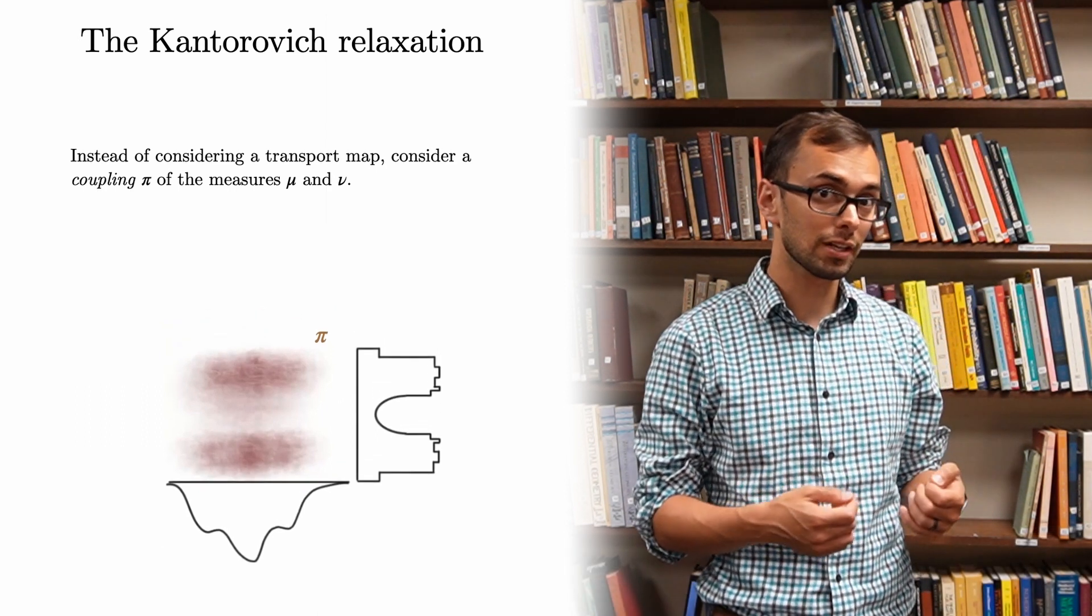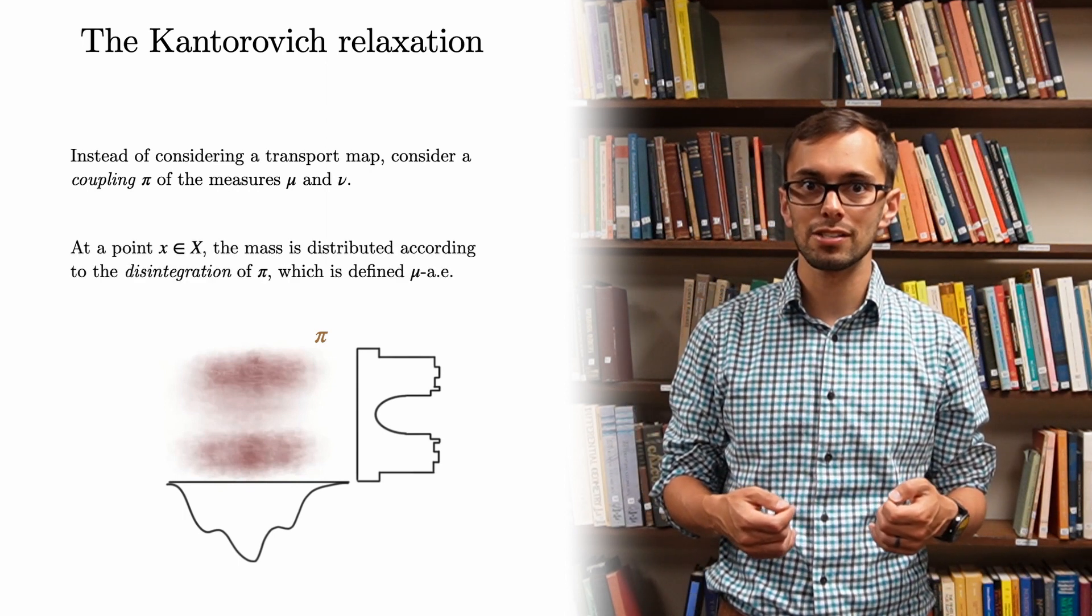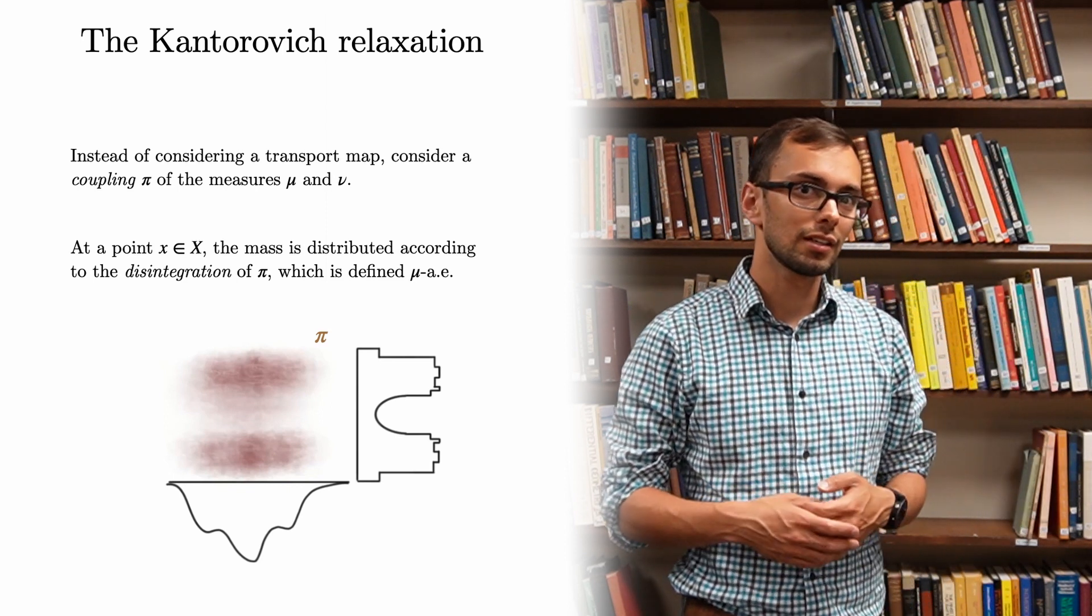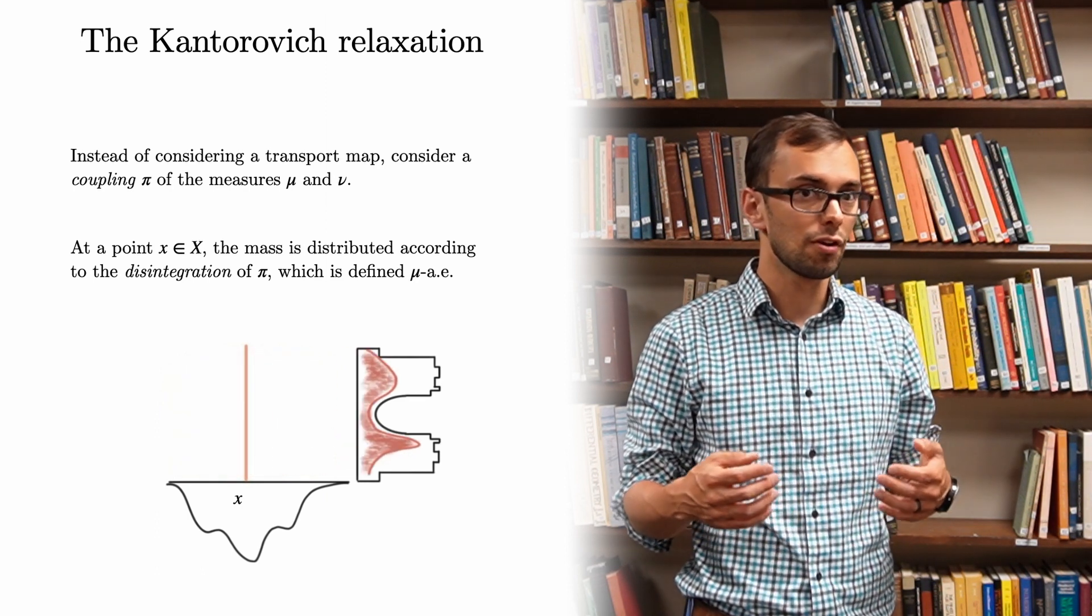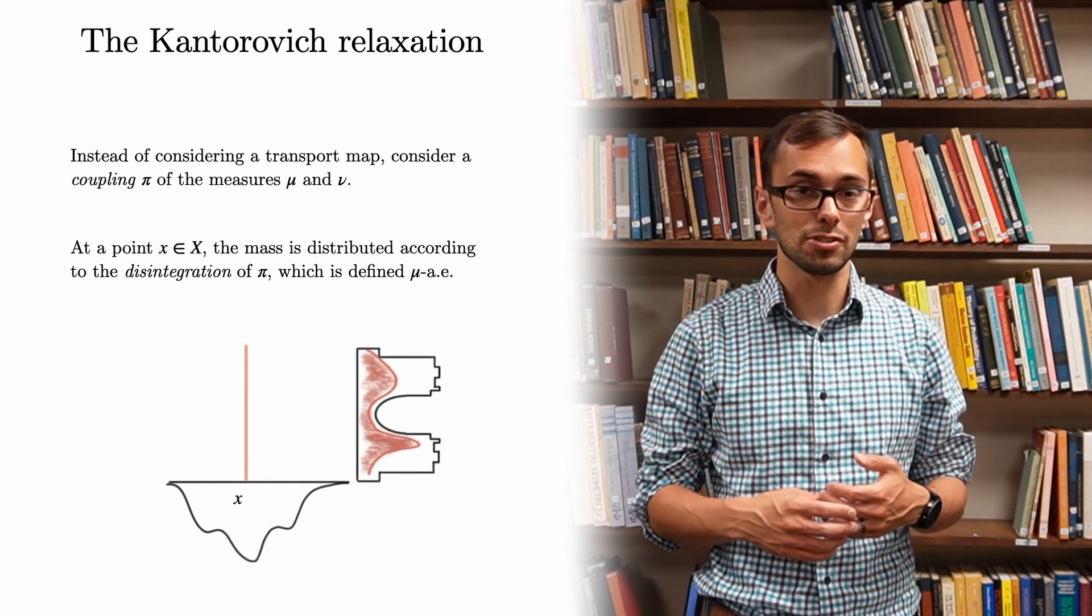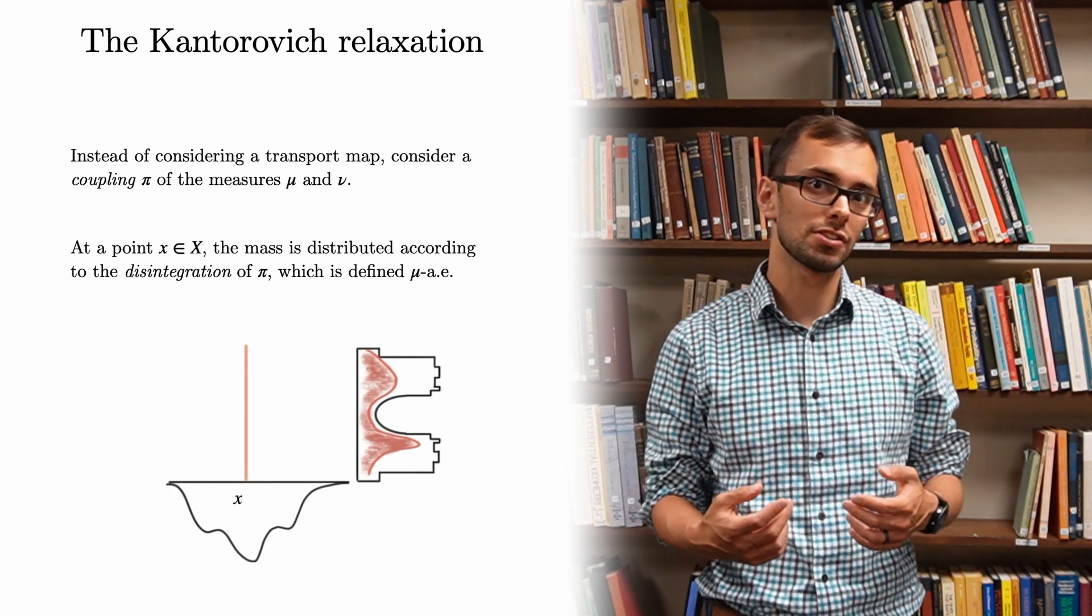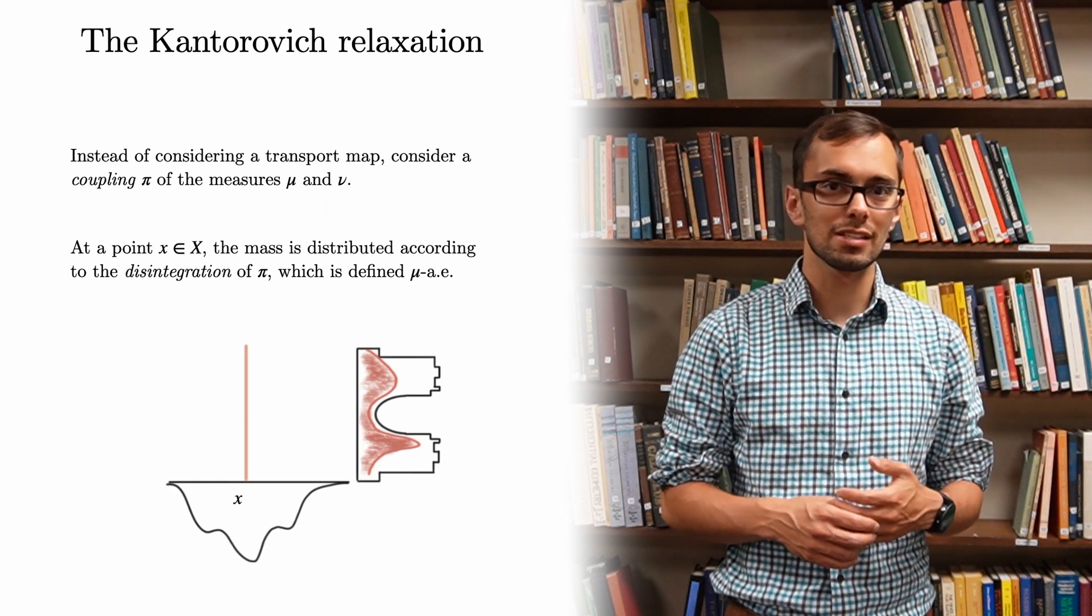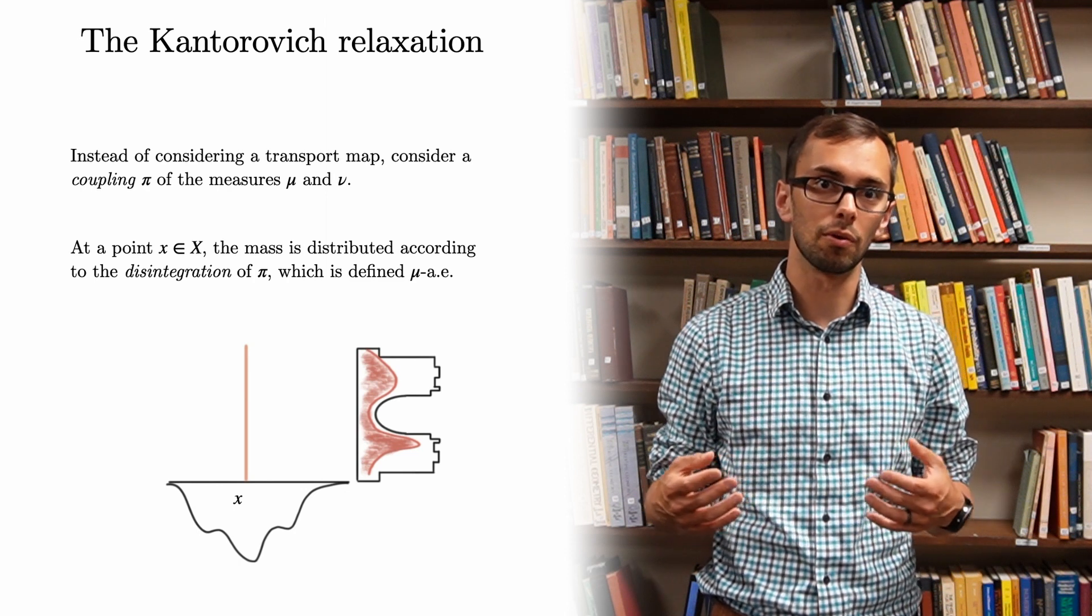To obtain the transport from the coupling, we consider the disintegration of pi and distribute the mass according to the disintegration, pi sub x. Intuitively, the disintegration gives the conditional distribution of pi for a fixed x value. In general, the point x might be a set of measure 0 for mu, so we need to use the disintegration instead of the conditional distribution to make this precise. However, what we can see is that the mass at a single point x is split apart and distributed throughout y.